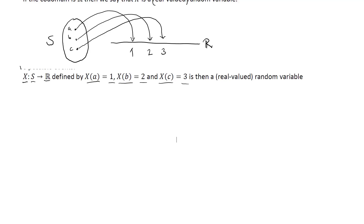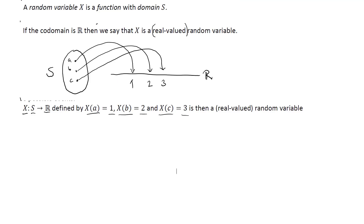The basic idea behind the random variable is a very simple one. We have an experiment that will lead to one outcome out of a collection of possible outcomes. These outcomes may have nothing to do with numbers whatsoever — it could be a color, a name, or any kind of symbol. By defining a random variable on this experiment, we simply translate outcomes to numbers. In our particular example, the experiment leads to A, B, or C, but translated through the random variable it leads to 1, 2, or 3.